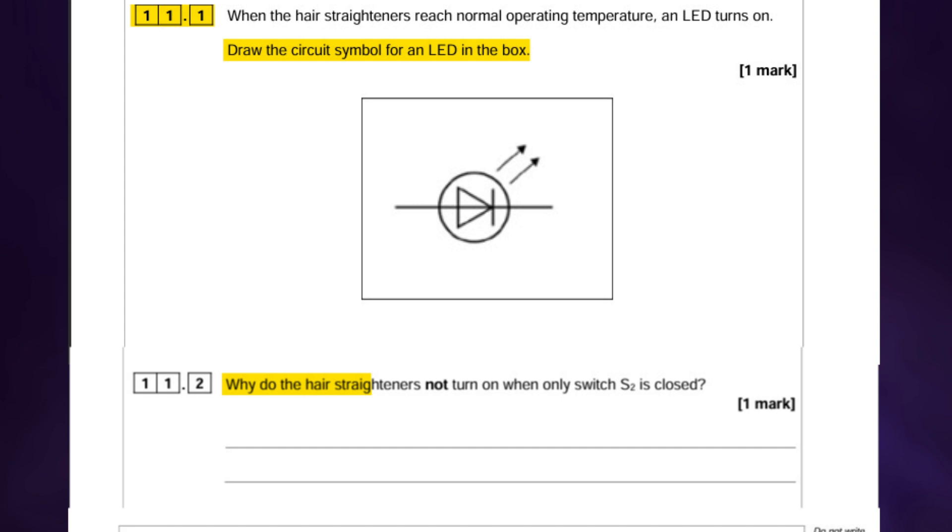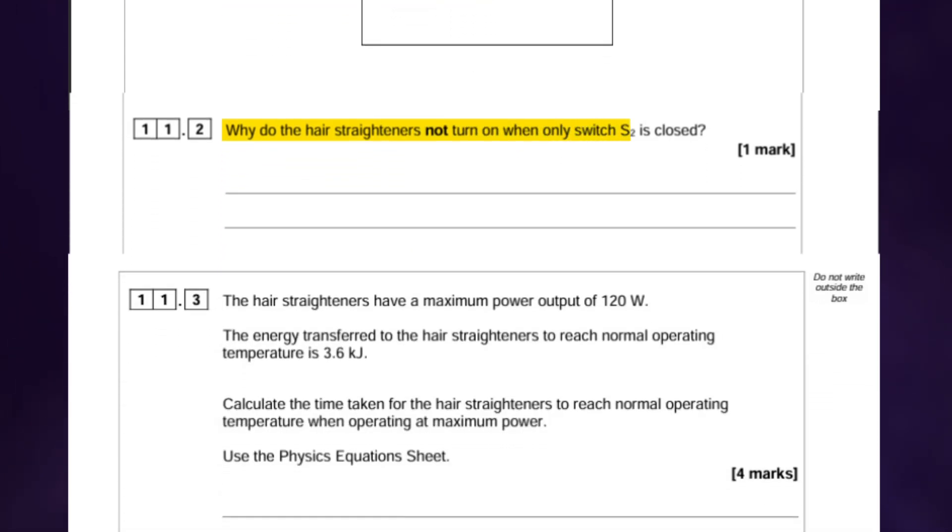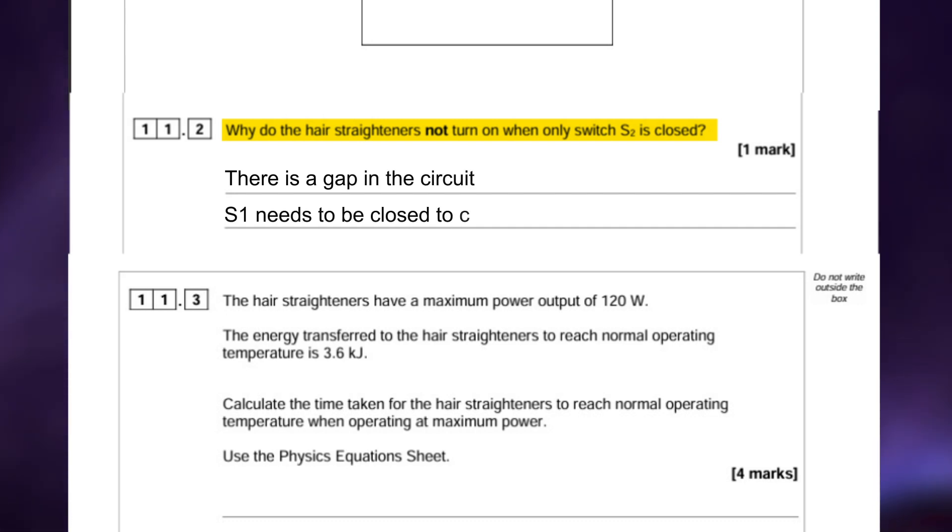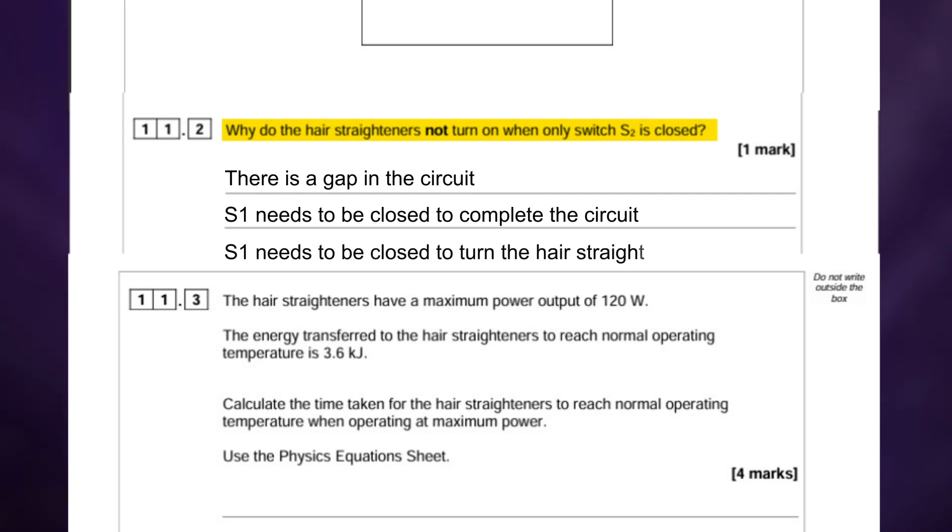The second part asks why do hair straighteners not turn on when only switch S2 is closed. And this is because there is a gap in the circuit, or you could have also said that S1 needs to be closed to complete the circuit or even S1 needs to be closed to turn on the hair straighteners.